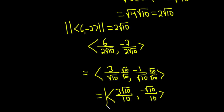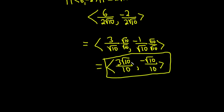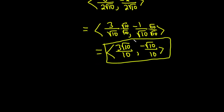This gives us a unit vector in the direction of our original vector (6, −2). You could check your answer by verifying that this is indeed a unit vector — meaning if you take the magnitude of it, you should get 1. Let's go ahead and check.